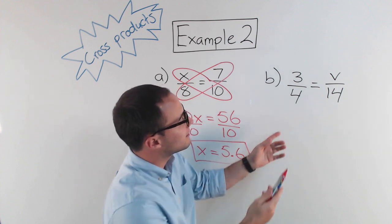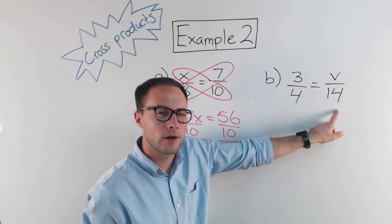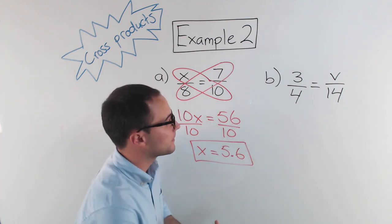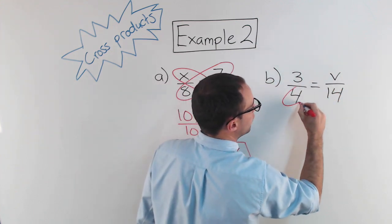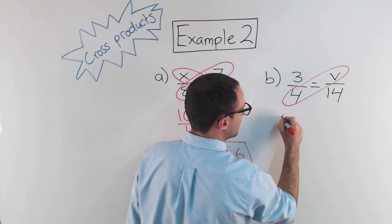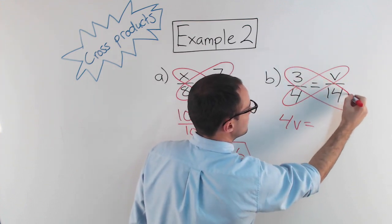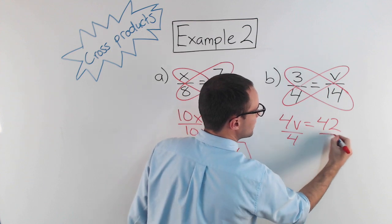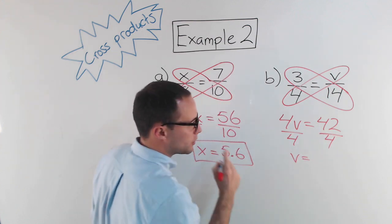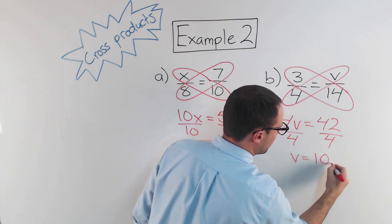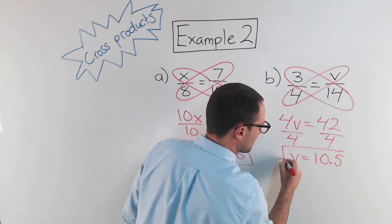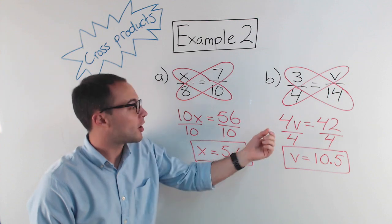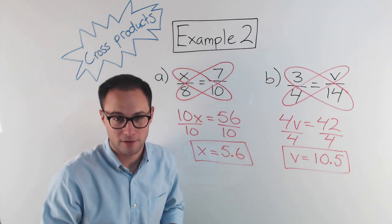Let's try the next one. Again, this is already simplified. It's not easy to go from 4 to 14, right? It's going to be multiplying by a decimal. So this, again, is why we're going to use cross products. So I'm going to find the products going across. 4 and v. So that's going to be 4v is equal to 3 times 14, which is 42. And then solve your equation. Divide by 4 on both sides. So I get v is equal to 10.5. So v is equal to 10.5. So, again, this is solving proportions using cross products. Here's something to try on your own.